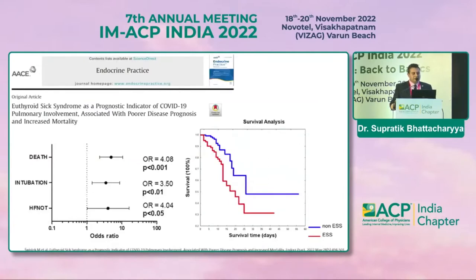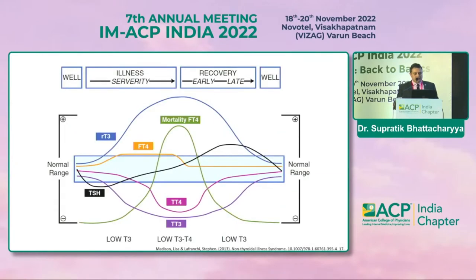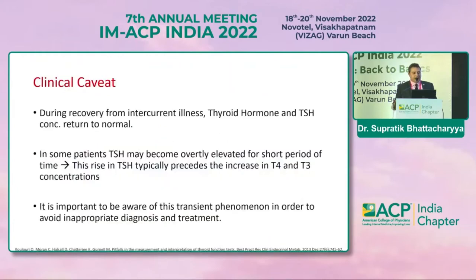Euthyroid sick syndrome is a prognostic indicator of COVID-19 pulmonary involvement, associated with poorer disease prognosis and increased mortality. Very low T3 numbers indicate prolonged hospital stay and greater severity of illness. During recovery from the intercurrent illness, thyroid hormone and TSH return to normal. In some patients, TSH may become overtly elevated for short periods. This rise in TSH typically precedes the increase in T4 and T3, and it is important to be aware of this transient phenomenon to avoid inappropriate diagnosis and treatment.